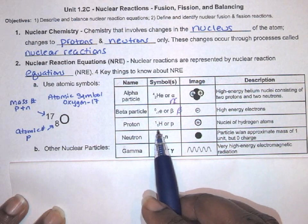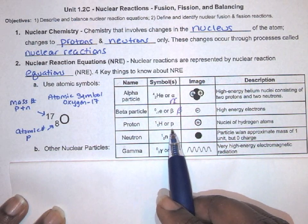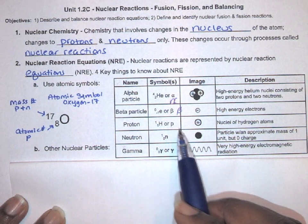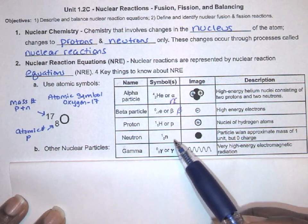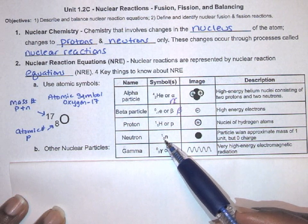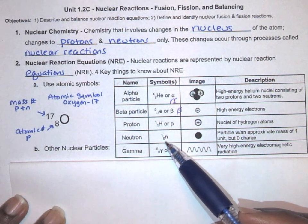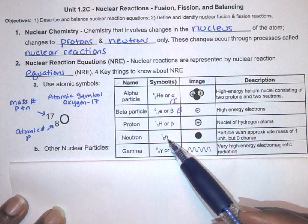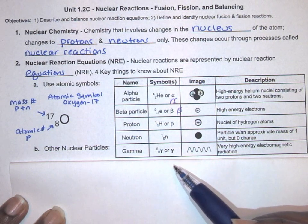Next, we have a proton, which is equivalent to a hydrogen-1 nucleus, or you can use a symbol P. A neutron has a mass number one and it contributes no charge to the nucleus, so there's a zero there. The upper number is one, lower number is zero, and the symbol is N for neutron.